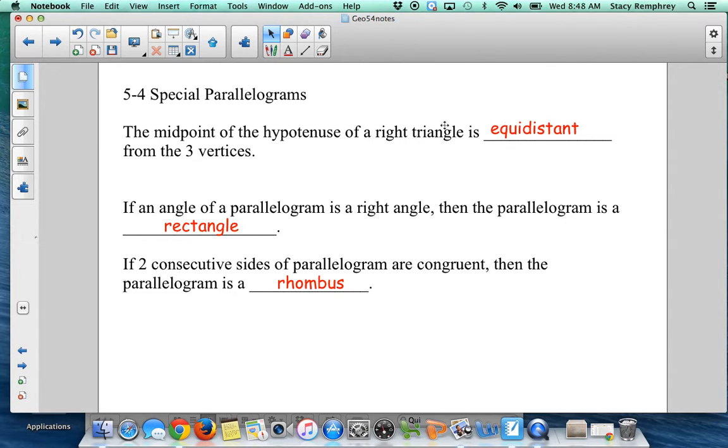What you should see is this was from the last part of the exploration. The midpoint of the hypotenuse of a right triangle is equidistant from the three vertices. If you need a picture of that idea, again, it has to be a right triangle and it has to be the midpoint on the hypotenuse. So if it's the midpoint of the hypotenuse, I know these are equal.